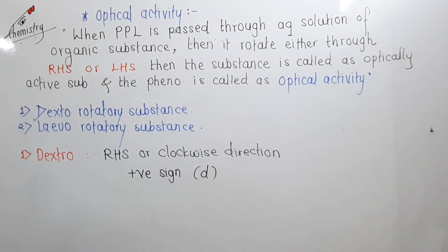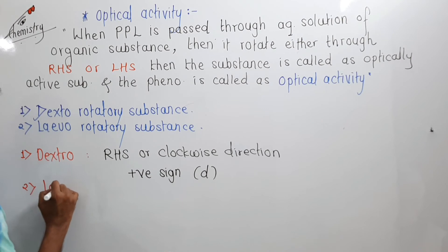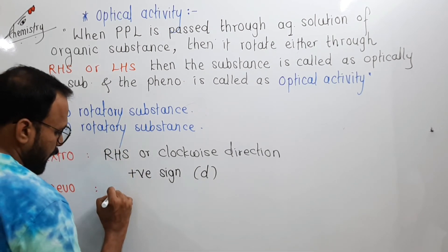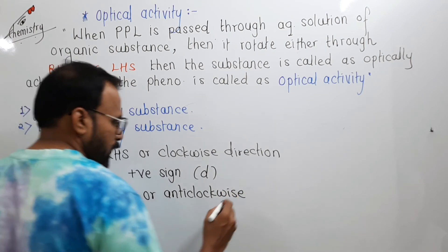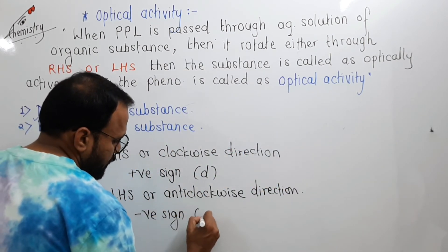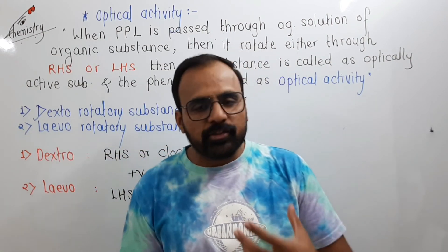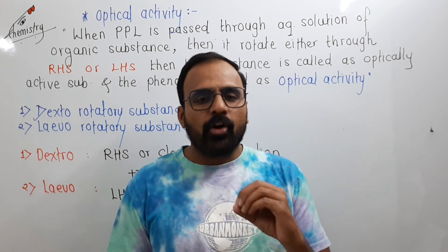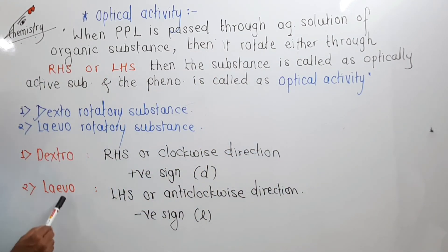Next, levorotatory substances. The optically active substance which rotates plane polarized light through the left-hand side or anti-clockwise direction is called a levorotatory substance. It is represented by a negative sign. So, based upon optical activity, substances are classified into two types: dextro and levo.